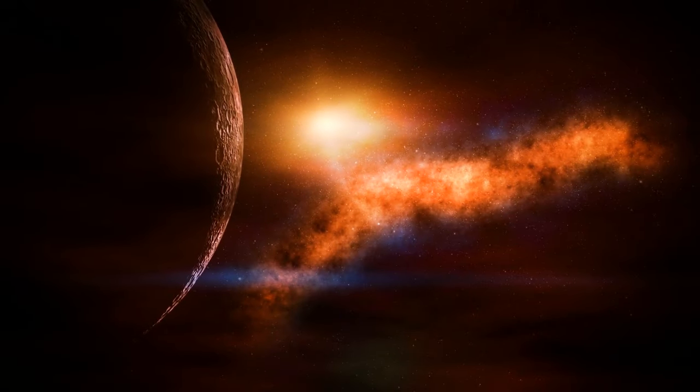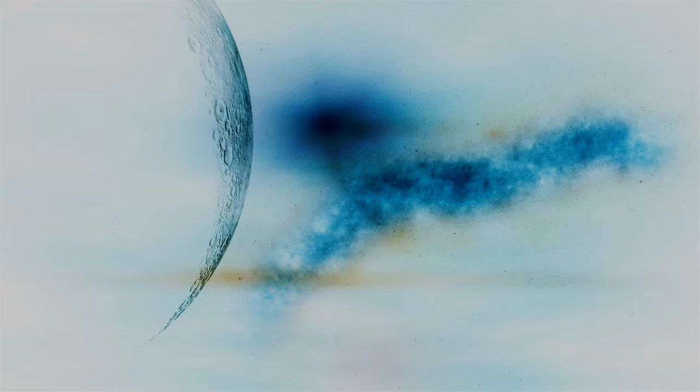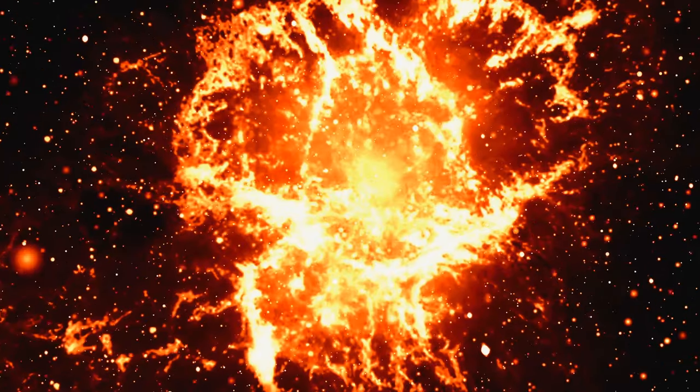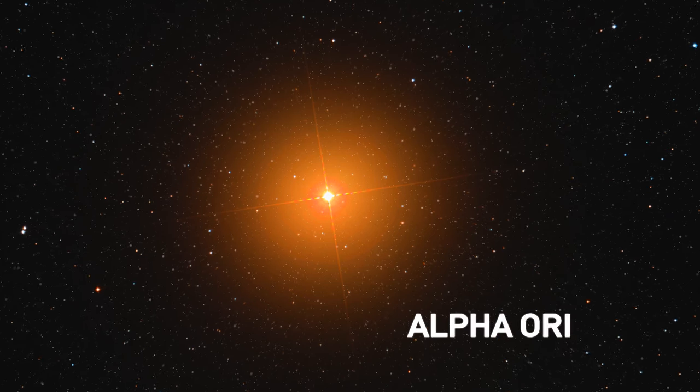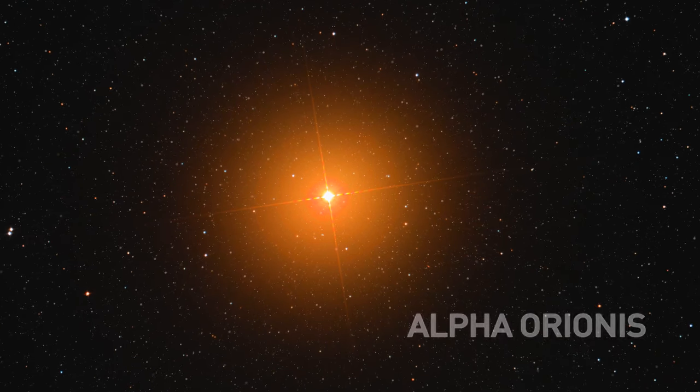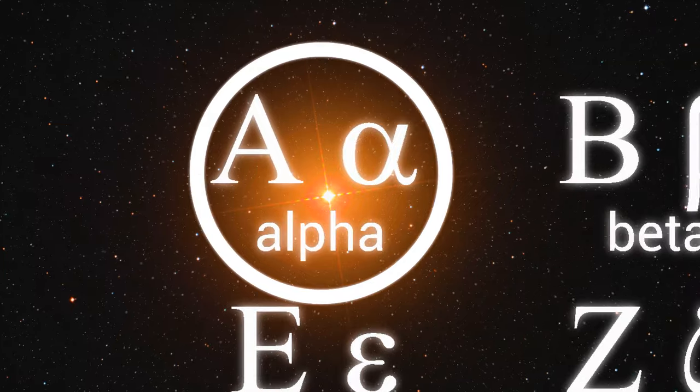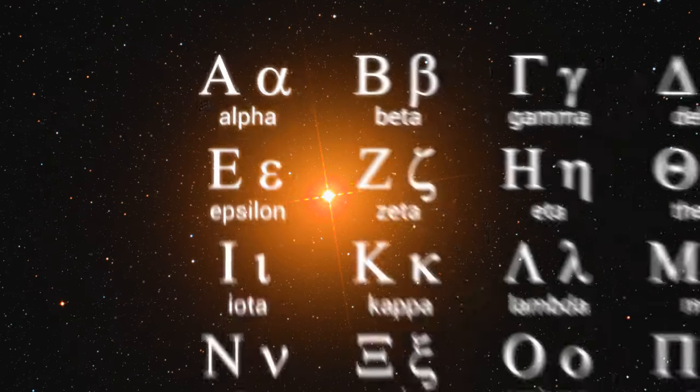Betelgeuse is by far the brightest star in the whole sky, in infrared light. This is an important fact because it relates to Betelgeuse's status as a supernova candidate, as we shall soon see. Betelgeuse is also named Alpha Orionis, another Greek letter designation. So we should conclude that Betelgeuse is the brightest star in Orion, right?